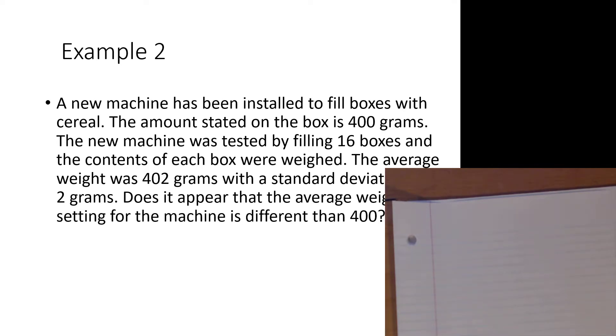We have a new machine that has been installed to fill boxes with cereal. The amount stated on the box is 400 grams. The new machine was tested by filling 16 boxes, and the contents of each box were weighed. The average weight was 402 grams with a standard deviation of 2 grams. Does it appear that the average weight setting for the machine is different than 400?